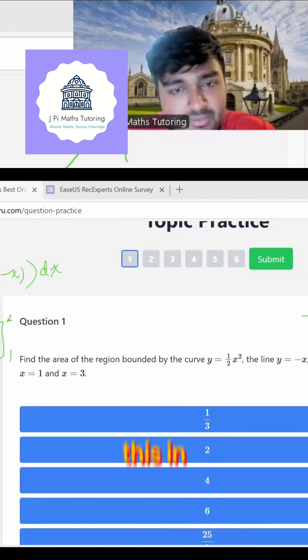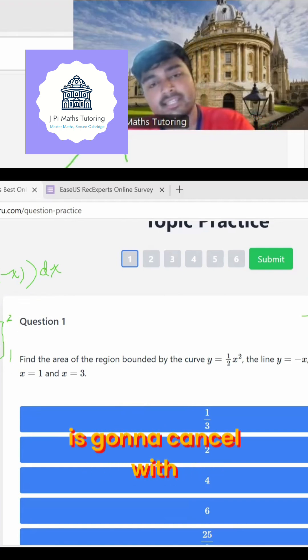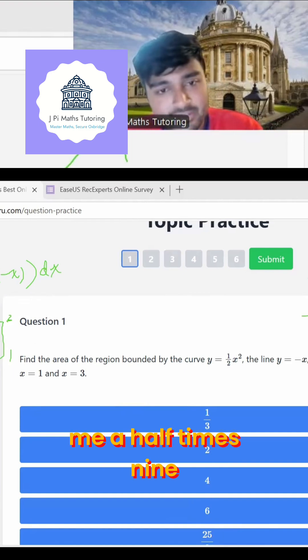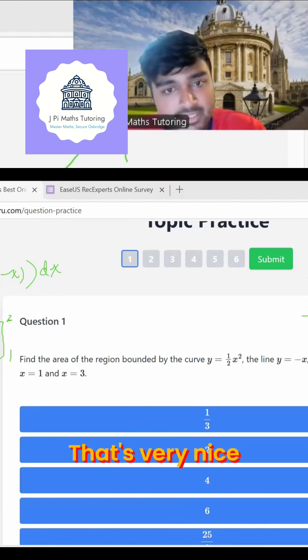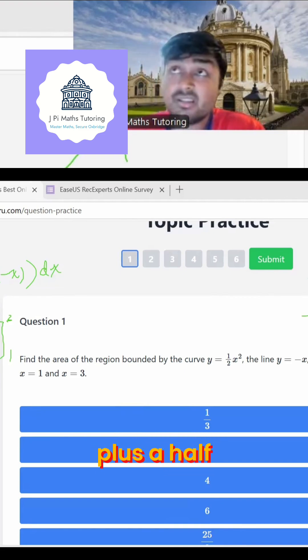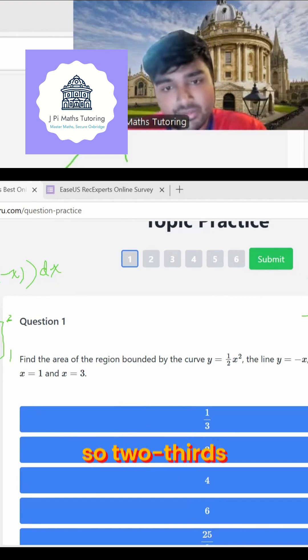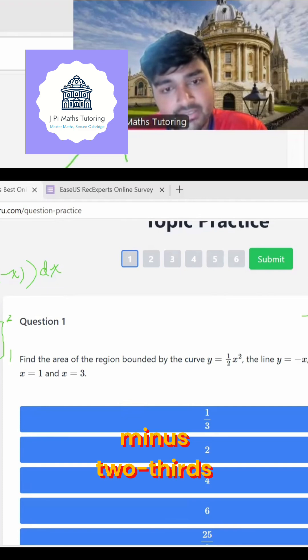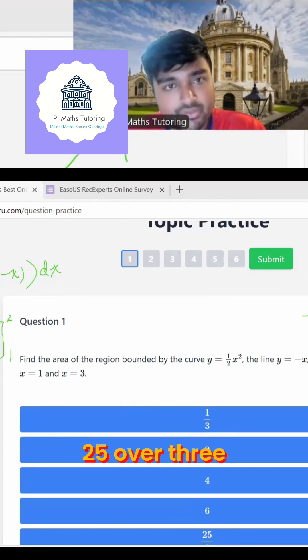Nothing too exciting here. I'm just going to plug this in. So when I plug in three, one of the threes is going to cancel with the sixth to give me a half times nine. So nine over two plus nine over two. That's very nice. And then I'm going to subtract when I put in one, I get a sixth plus a half. So that's going to be four sixths. So two thirds. So I get nine minus two thirds. So that's going to be 25 over three.